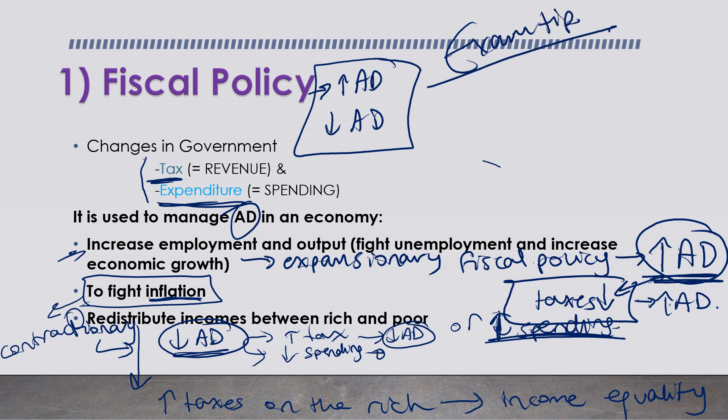It's important to understand that fiscal policy is not simply about government revenue and government expenditure in isolation, but about the relationship between the two - whether there is a balanced or an unbalanced budgetary position in an economy.